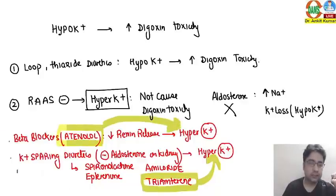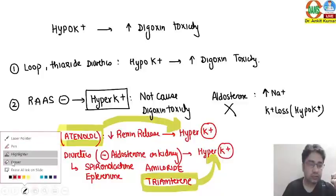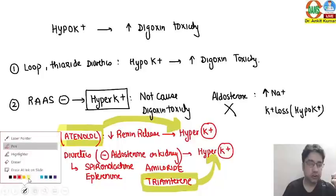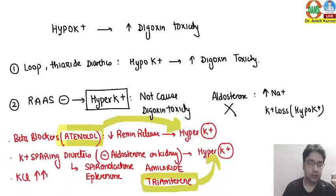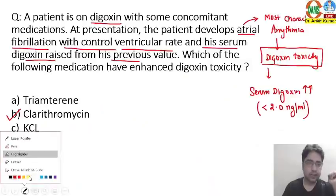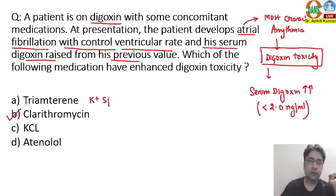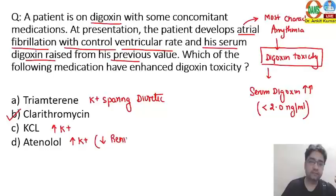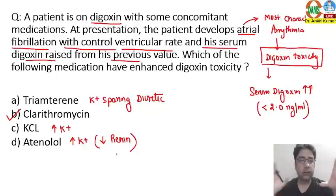The third option given is potassium chloride — you are giving potassium from outside, which will lead to hyperkalemia in the blood. So potassium chloride will also not lead to digoxin toxicity. So triamterene is a potassium-sparing diuretic leading to hyperkalemia, which reduces digoxin toxicity. Potassium chloride itself is potassium. And beta blockers also increase potassium by decreasing renin release. So options A, C, and D are all ruled out.